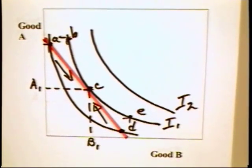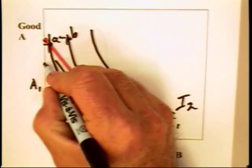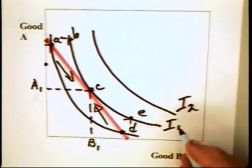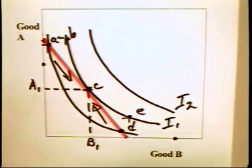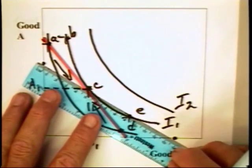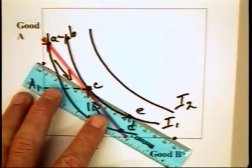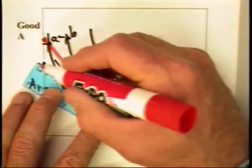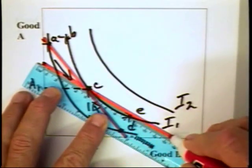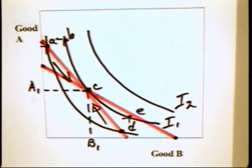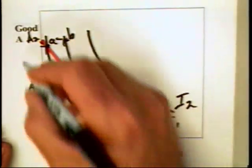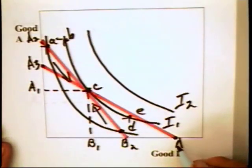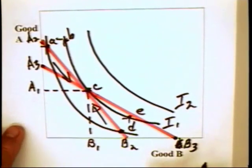Now suppose we are at combination C and the price of good A were to rise, which means the individual would not be able to buy as much of A. And suppose the price of B goes down — that is, the individual can buy more of B if that's all the individual is buying. The moral of the story is that the budget constraint pivots on point C and moves to a new curve, from a position of A2, B2 to a position of A3, B3.